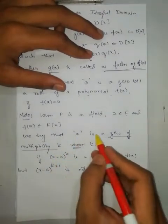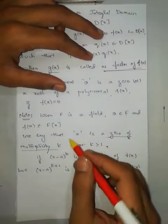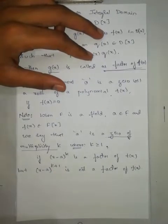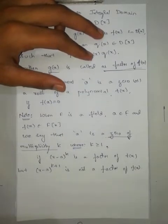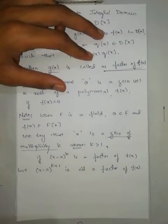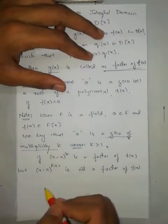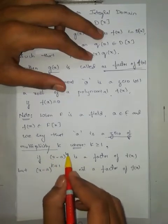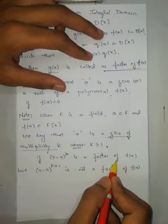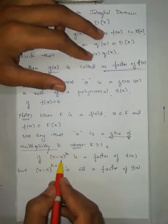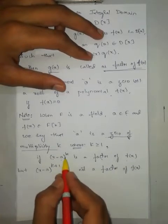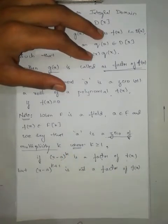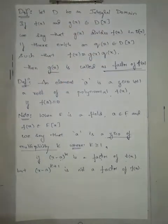Multiplicity means how many times a is a zero of the same polynomial. For example, if I take x² − 2x + 1, then x = 1 is a zero and it is repeated twice, so it is of multiplicity two. If (x − a)^k is a factor of f(x) but (x − a)^(k+1) is not a factor of f(x), that defines multiplicity k.